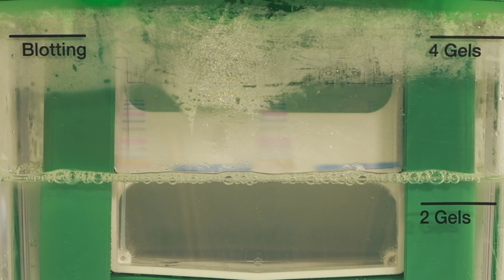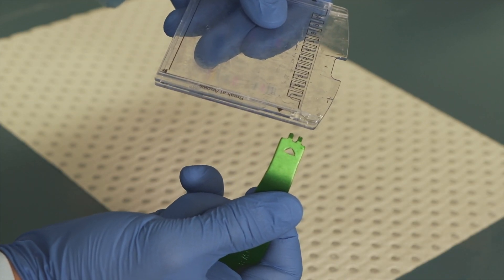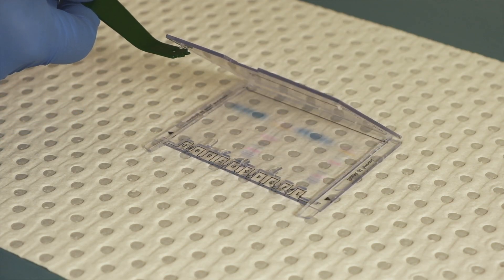Once the gel has finished running, release it from its plastic casing. Using a separator, lever the plastic casing apart. This can require a little more force than what is typically used for these protocols. Peel off the casing and place the gel in a tray for further processing.